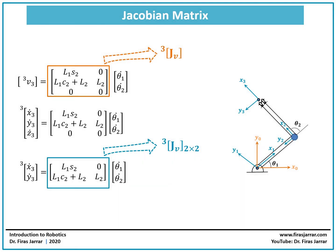In many cases we may be only interested in the linear portion of the Jacobian matrix — the relationship where the left side contains only x dot, y dot, and z dot. This is the linear portion, usually denoted Jv, pre-multiplying the joint rates theta 1 dot and theta 2 dot. Since the component of velocity in the z direction is going to be zero for this planar arm, we can eliminate that row and have the Jacobian as a square 2x2 matrix, which will be useful later when we look for the inverse and singularities.